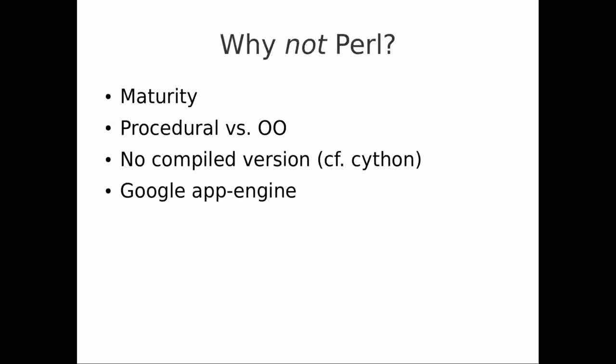The 'why not Perl' argument is perhaps because Perl is a pretty mature language — maybe you want to work with something more fresh. Perl is a procedural language rather than an object-oriented language. The objects and modules have been added on post-facto, and while they provide object-oriented capabilities, Perl was really written as a procedural language. There's still no compiled version of Perl, and for example Python, which people often compare with Perl, has a compiled version called Cython.